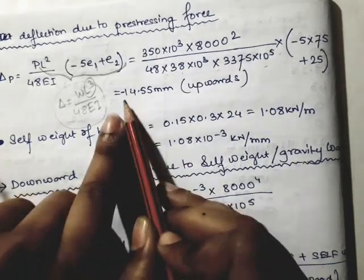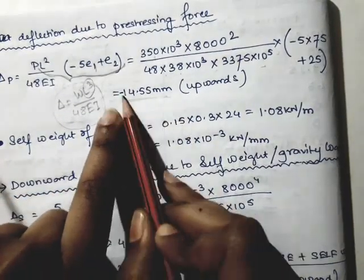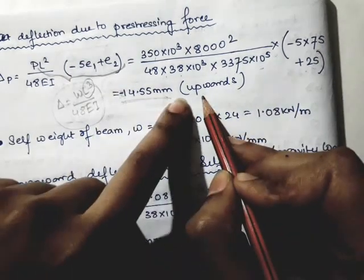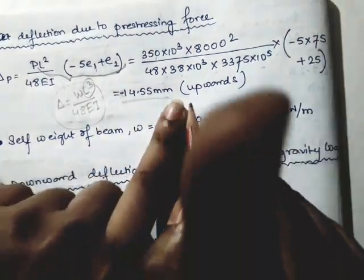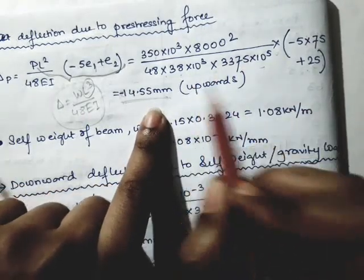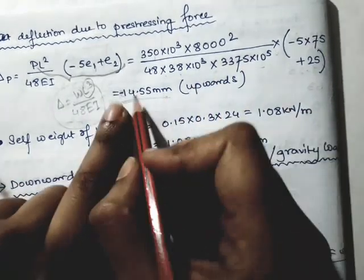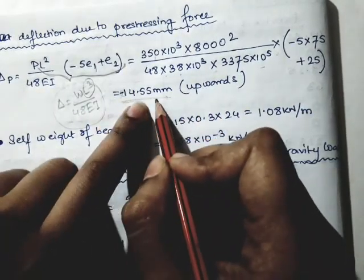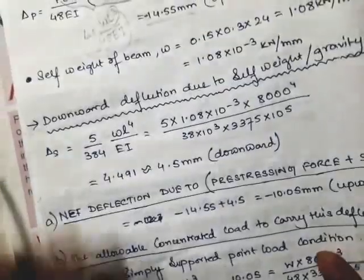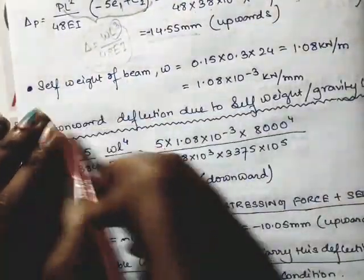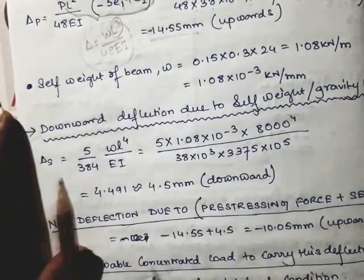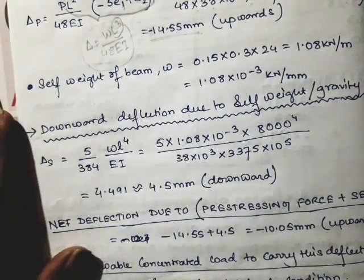This value is negative in sign, so the deflection pattern will be upward. Due to the pre-stressing force, the deflection will be 14.55 mm upward. Now we will also evaluate the downward deflection due to self weight.